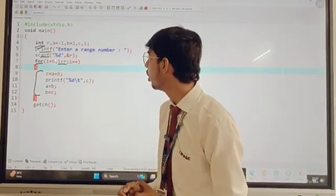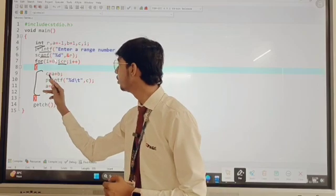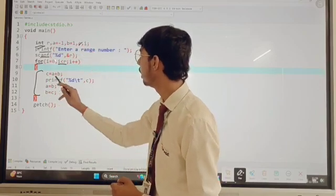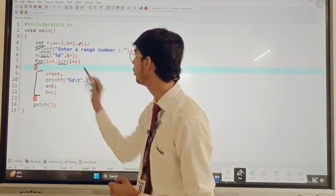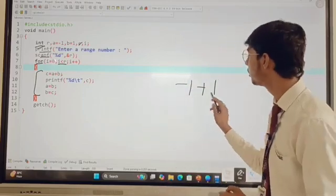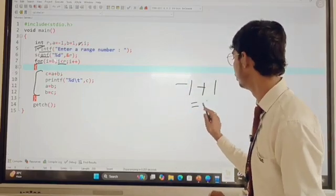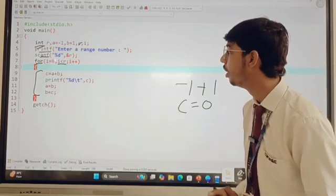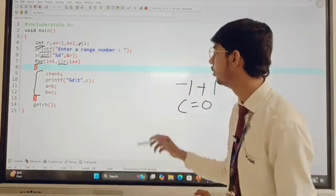And in this block of code, we check c is equal, if c is equal to a plus b, it means a is equal to minus 1 and b is equal to 1. So, minus 1 plus 1 is equal to 0, so c is equal to 0, then we print c value is 0.